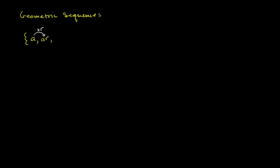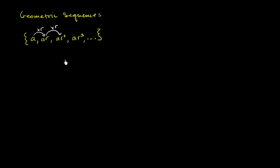To get the third term, let's multiply the second term times r. We're going to have a·r squared. Multiply by r again, you're going to get a·r to the third power, and you just keep on going like that. This is an infinite geometric sequence — we just keep going on and on.